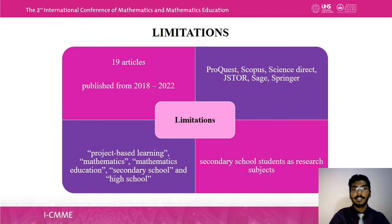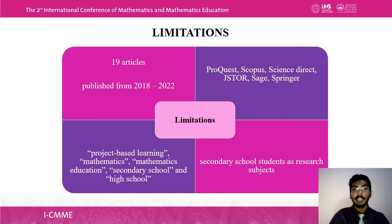There are four types of limitations in this systematic literature review. First, only 19 articles were reviewed, all published from 2018 to 2022. Second, only six databases were used: ProQuest, Scopus, ScienceDirect, JSTOR, Sage, and Springer. Third, only secondary school students were considered as research subjects. Fourth, the keywords used were 'project-based learning,' 'mathematics,' 'mathematics education,' 'secondary school,' and 'high school.'